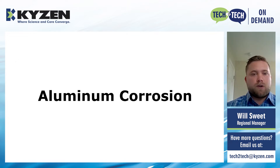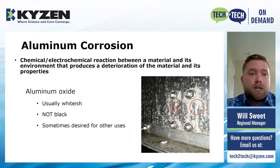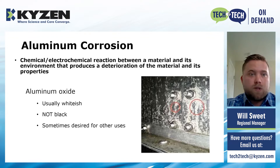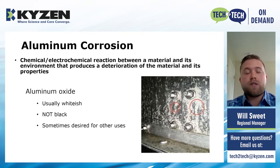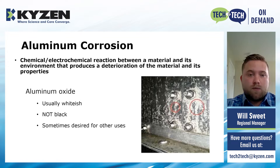Aluminum corrosion is an electrochemical reaction between a material and its environment that produces a deterioration of the metal and its properties. The metal deteriorates and its specifications are no longer met as it starts to corrode. This aluminum oxide usually appears whitish in hue — as you can see in the picture to the right, it is whitish in color, not black. If you're seeing black deterioration on your aluminum parts, you're probably using high-alkalinity products on them, which is a completely different chemical process.